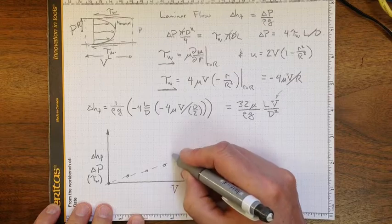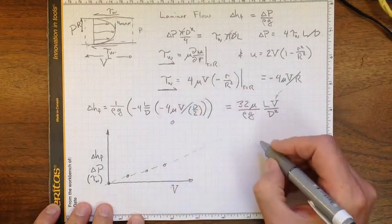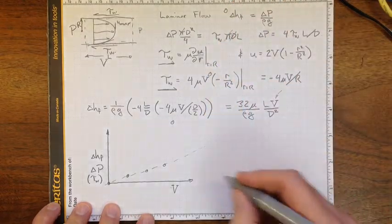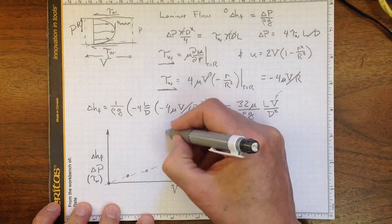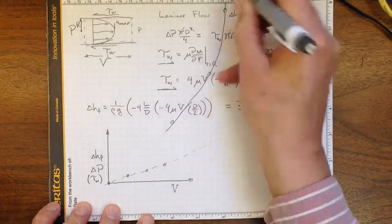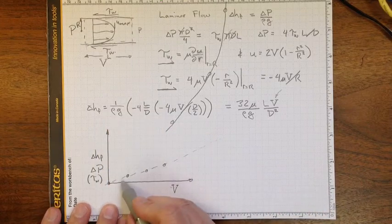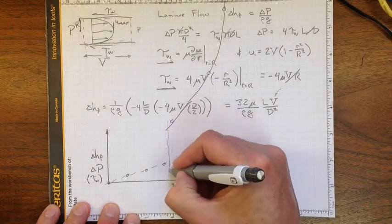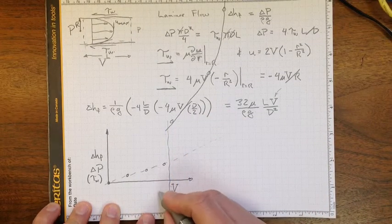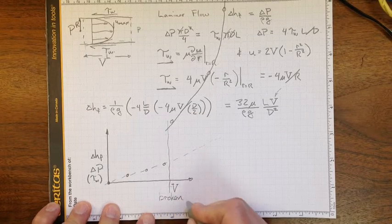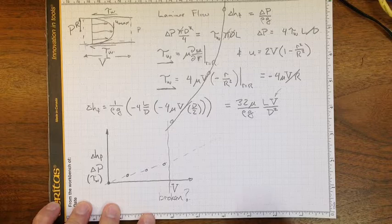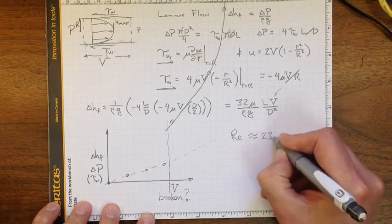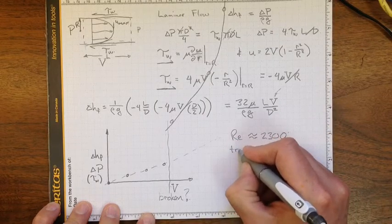Except, suddenly, right about here, we get data points that are up here, and up here, and up here, and we suddenly have an increasing head loss, much bigger than the values we initially got. Something broke, right here. And what happened right here, is at about a Reynolds number of about 2300, we had transition to turbulence.